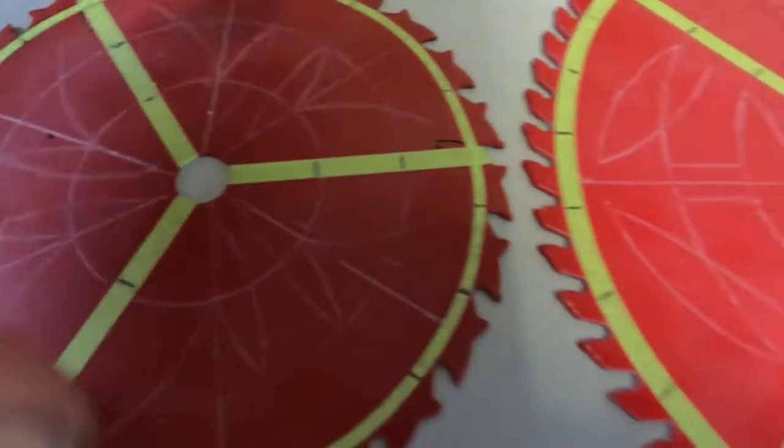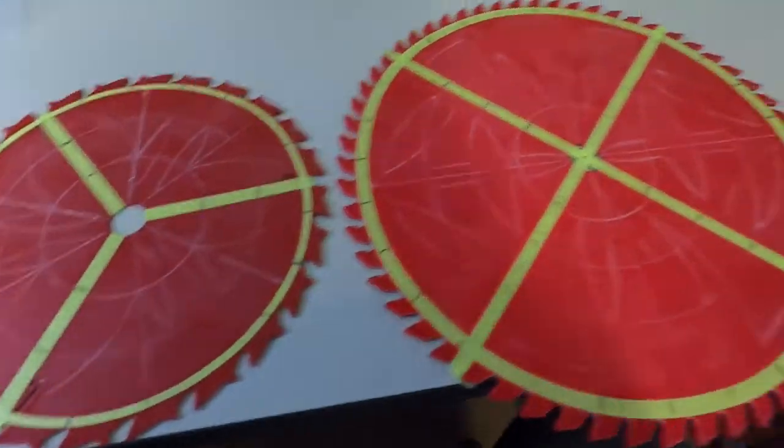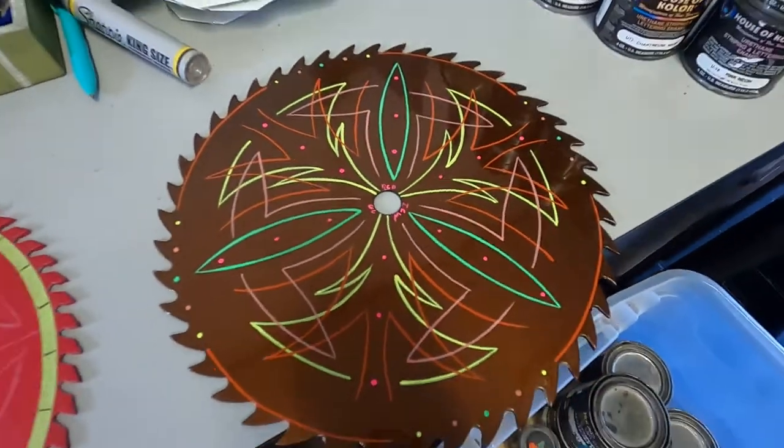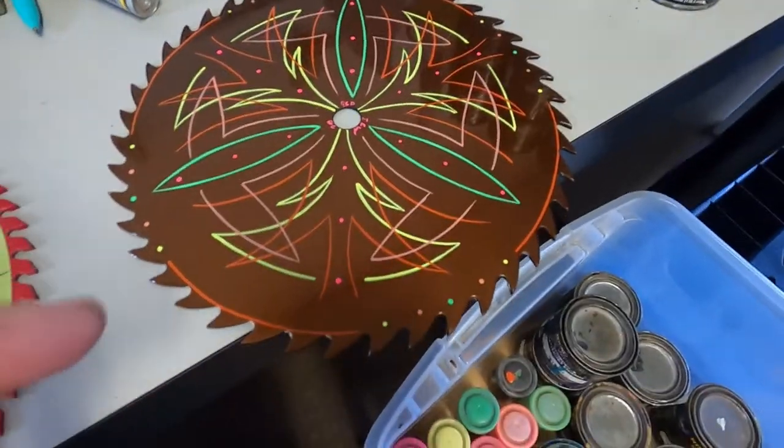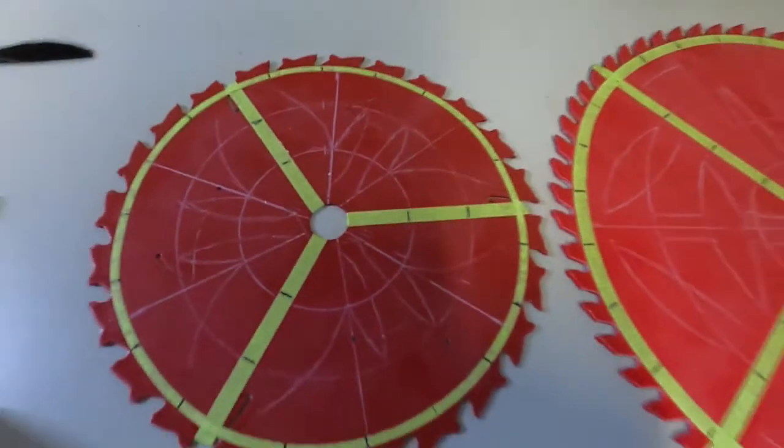I'm going to be doing basically a kaleidoscope pattern on a small one and on this big one here. That's the end project, how they end up looking. I could have gone a little bit more on that one if I really wanted to. It all depends on what you want to do, but here's how I do it.